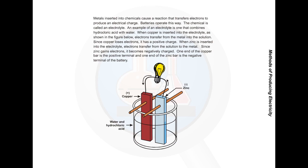An example of an electrolyte is one that combines hydrochloric acid with water. When copper is inserted into the electrolyte, as shown here, electrons transfer from the metal into the solution. Since copper loses electrons, it has a positive charge.